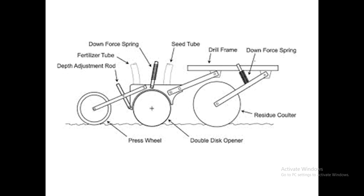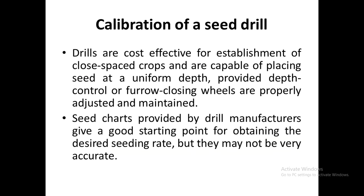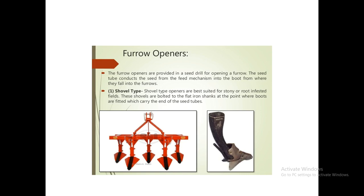The arrangement of components shows the feed tube, seed tube, and fertilizer tube with a double disc opener positioned directly below the seed tube. Once the furrow is opened, seeds and fertilizer from the tubes fall into the ground, and then a press wheel or furrow closing device closes the opened furrow. Another type of furrow opener is the shovel type, which uses shovels or tines attached to the seeder to open furrows.